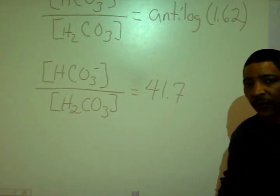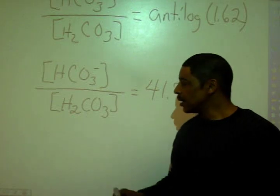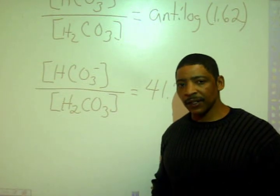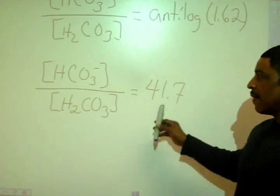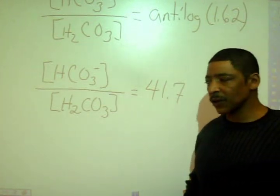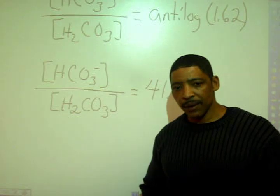In other words, for every one mole of carbonic acid used to produce this buffer system, we should add 41.7 moles of our bicarbonate ion.